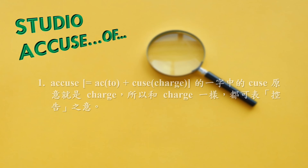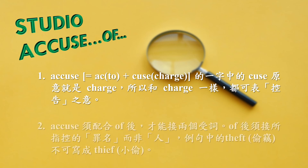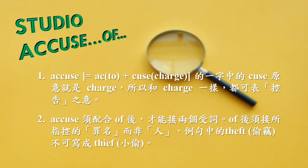Studio: 'accuse of.' 让我们来更深一层的了解accuse of吧。One: 'accuse' equals ac + cuse, 本身就是charge，控告，控诉的意思。它的原意就是去控告，所以它和charge一样都可以表示控告。Two: 需要配合介词of后面才能再接另一个受词。后面需接所指控的罪名，而非人。所以例句中的theft（偷窃）千万不能改写成thief（小偷）。